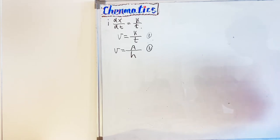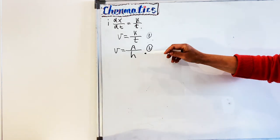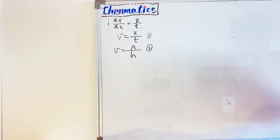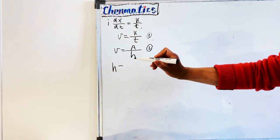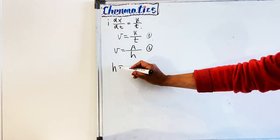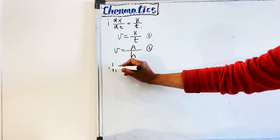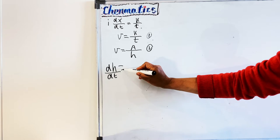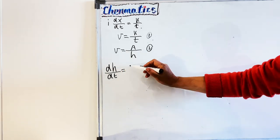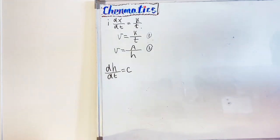Equations 1 and 2 don't have much direct relation — one has k over t and the other has a over h — so we need to somehow find h in terms of t, and then replace h with something involving t to get closer to equation 1. Digging further into the question, it says the first snow of the season began to fall during the night, and the depth of snow h is increasing at a constant rate, meaning dh/dt equals a constant, which we call c.